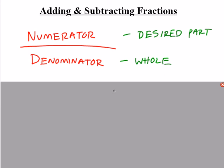On the top, you have the numerator, which is the desired part, whatever you're measuring. And on the bottom, you have the denominator, which is how many total parts you've broken your whole up into.